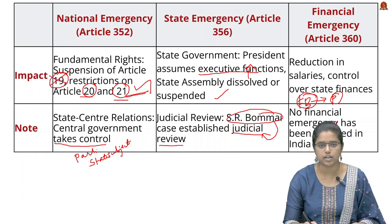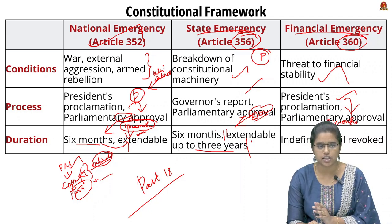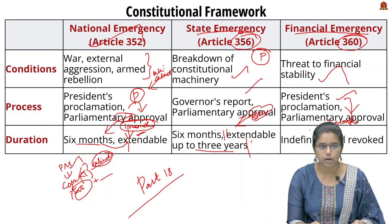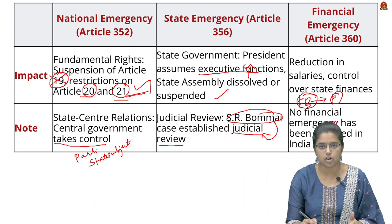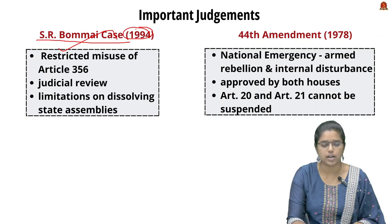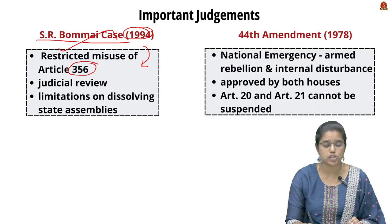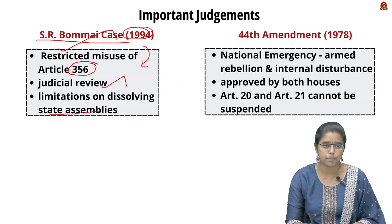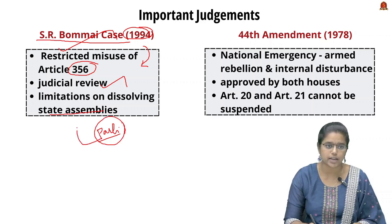To revise: National Emergency is under Article 352, State Emergency under Article 356, and Financial Emergency under Article 360. The SR Bommai case of 1994 restricted the misuse of Article 356. It established that the declaration of State Emergency is subject to judicial review, and the state assembly can be dissolved only with the approval of Parliament — not merely on proclamation of emergency.